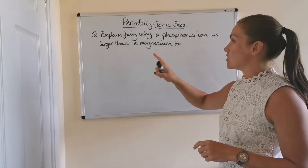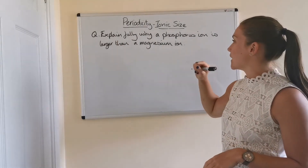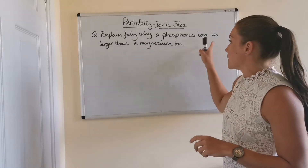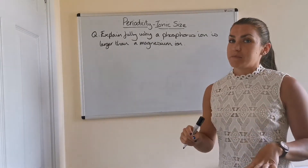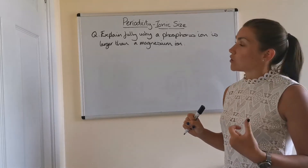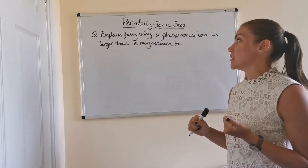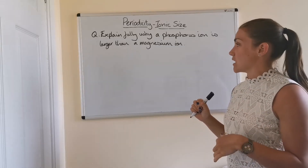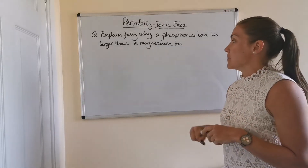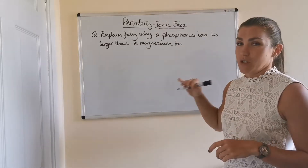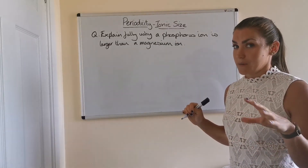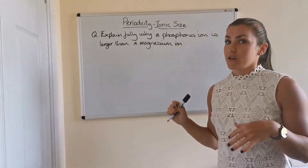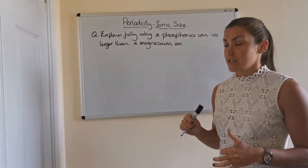Now we're going to look at this question: explain fully why a phosphorus ion is larger than a magnesium ion. This is talking about the ions, not the atoms — if it was talking about atoms, the question would actually be the opposite, asking why the phosphorus atom is smaller than the magnesium atom. It's important to look at the question to see whether it's talking about an atom or an ion. Because it's talking about the ions, we need to work out what these elements exist as when they form ions.